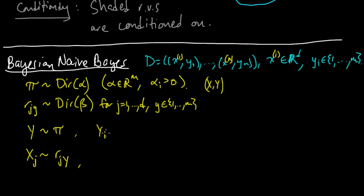And that's x_i. So y_i is just the same, and x_ij is just like this, y_i. Okay, so this was the model description, the probabilistic model.